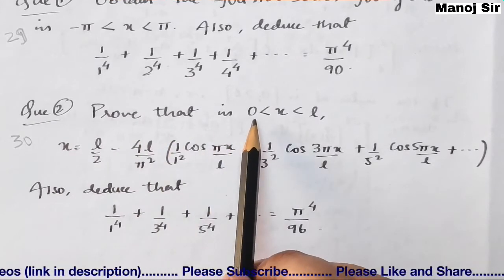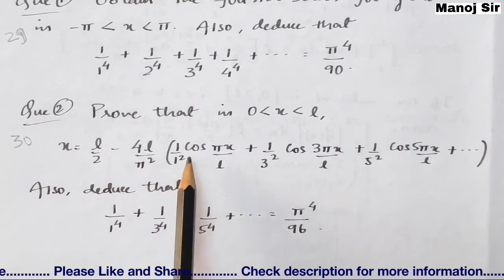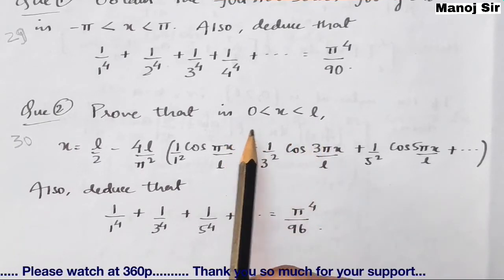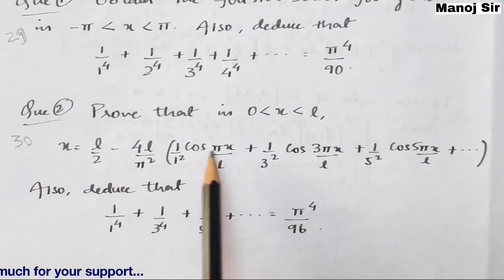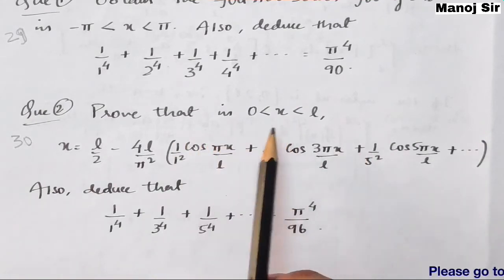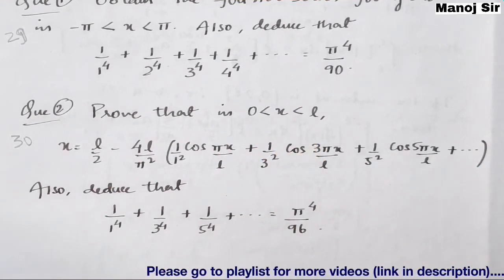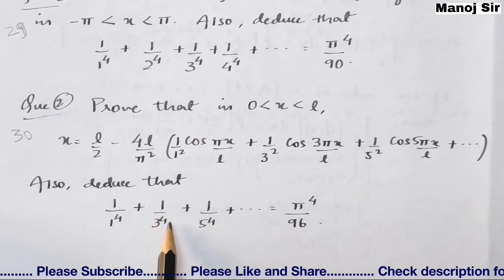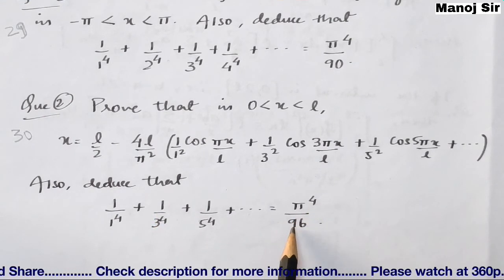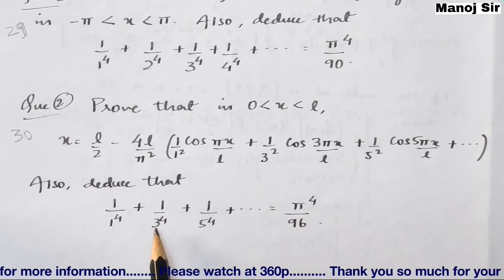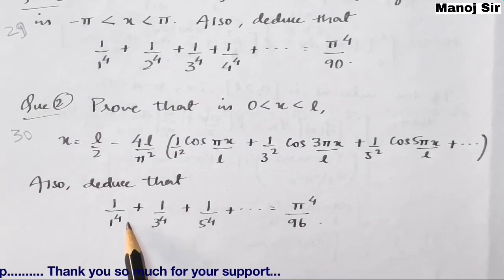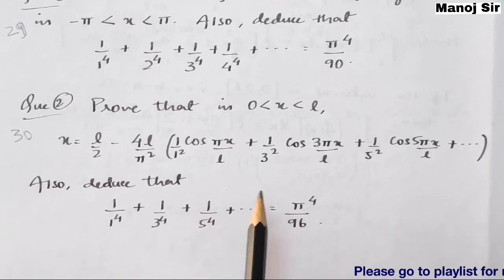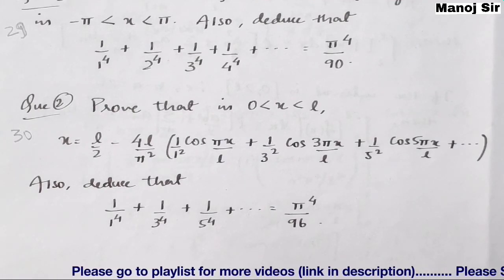In video 30, the problem is to prove that in the interval (0, l), x = l/2 − (4l/π²) × (cosine series terms), which is a half-range cosine series. Then deduce that 1/1⁴ + 1/3⁴ + 1/5⁴ + ⋯ = π⁴/96. Again, the presence of fourth powers is the key indicator to use Parseval's identity. We will start solving these problems now.